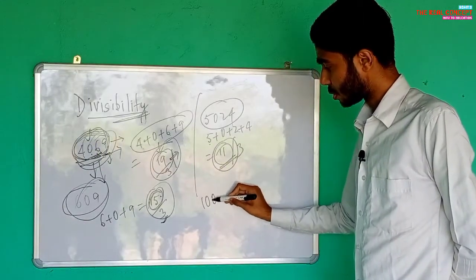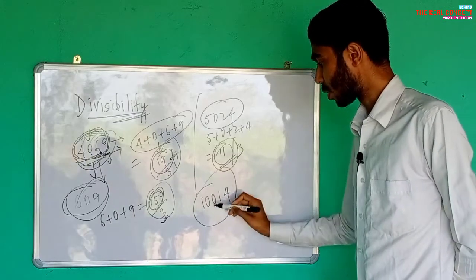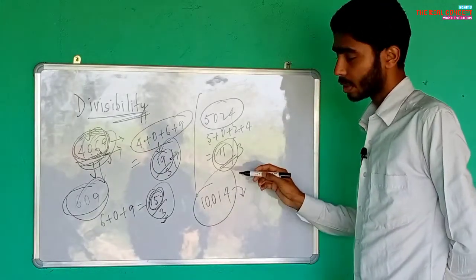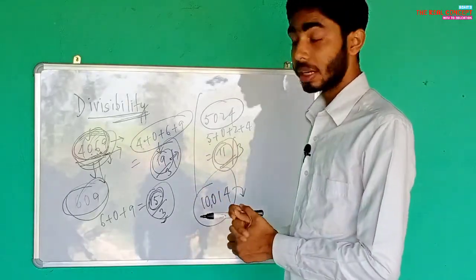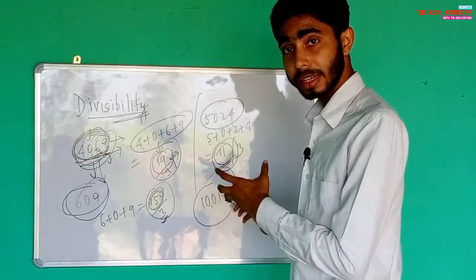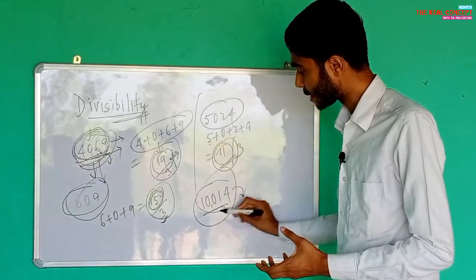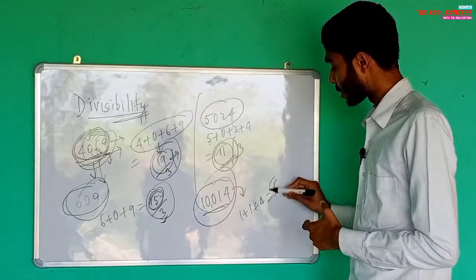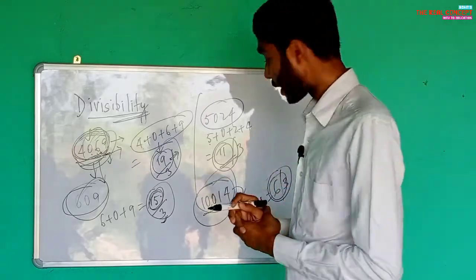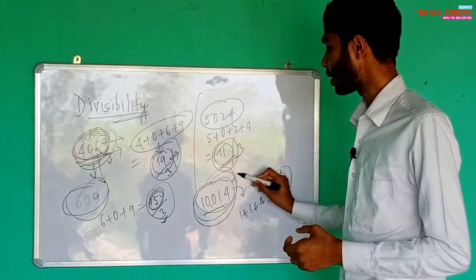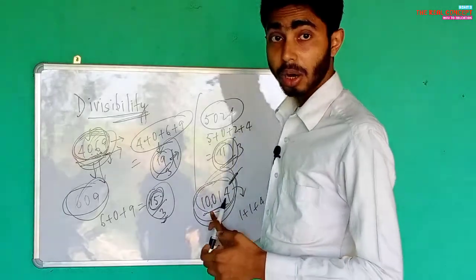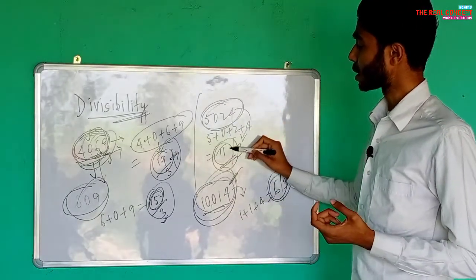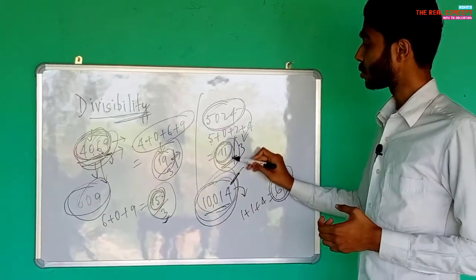Let's take one more example: ten thousand and fourteen, that is 10014. We find the sum of the digits: one plus zero plus zero plus one plus four. The total sum is six. Six is divisible by three, so 10014 is divisible by three. Compare this with 5024 where the sum was eleven — eleven is not divisible by three, so 5024 is not divisible by three.